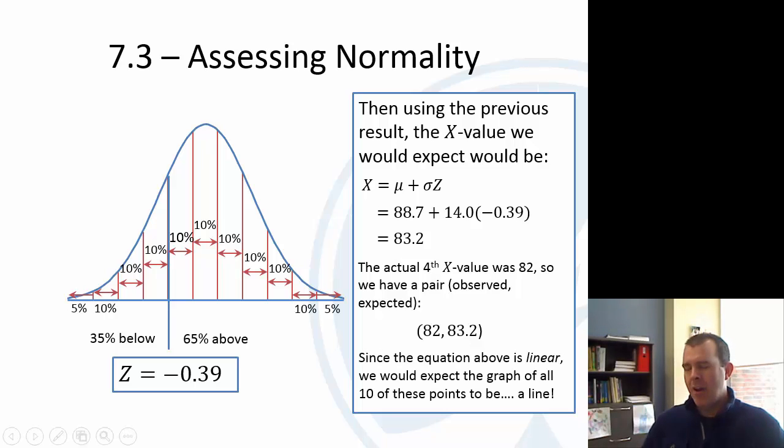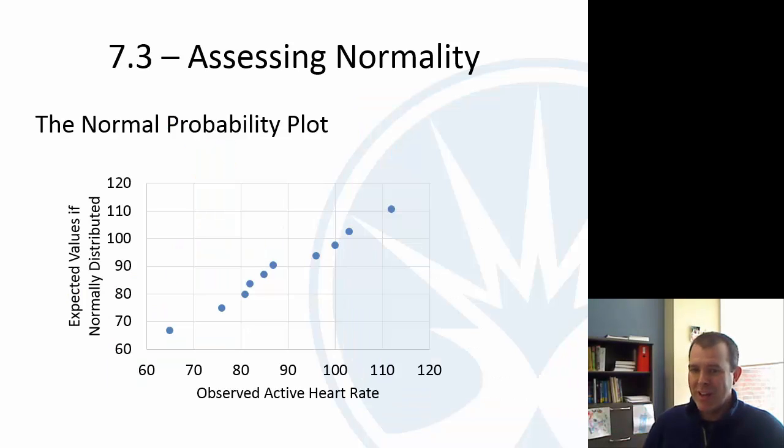We would do 10 of these pairs for all 10 points. We'd get what we actually observed and if they were perfectly normally distributed, what would we observe? Since this equation is linear - x and z are the variables, you can kind of see an mx plus b type thing from a line - we would expect these 10 points to be a line. Here's the graph, called a normal probability plot. Here are the observed ones and here are the expected ones. You can see pretty linear.